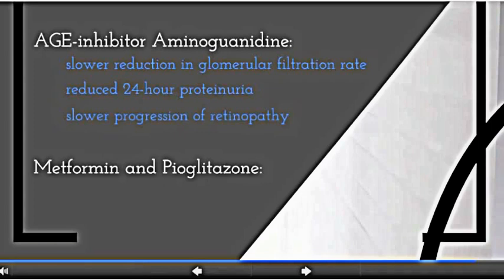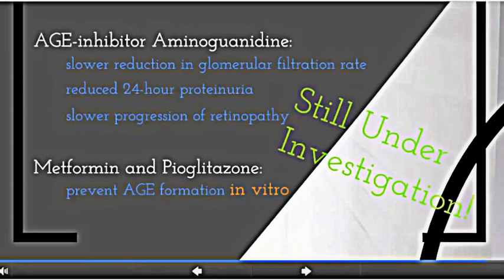As well, commonly prescribed type 2 diabetes hyperglycemic reducing medications, metformin and pioglitazone, have been shown to prevent AGE formation in vitro. However, many of these agents are still under investigation, both in animal studies and human trials.